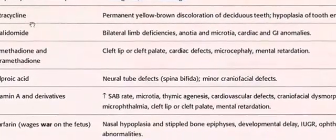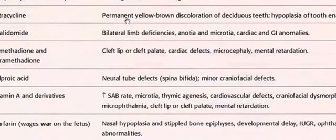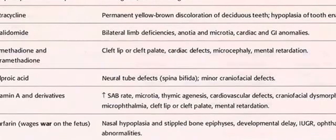Tetracycline: always remember 'T' for teeth — permanent yellow-brown discoloration of deciduous teeth and hypoplasia of tooth enamel.